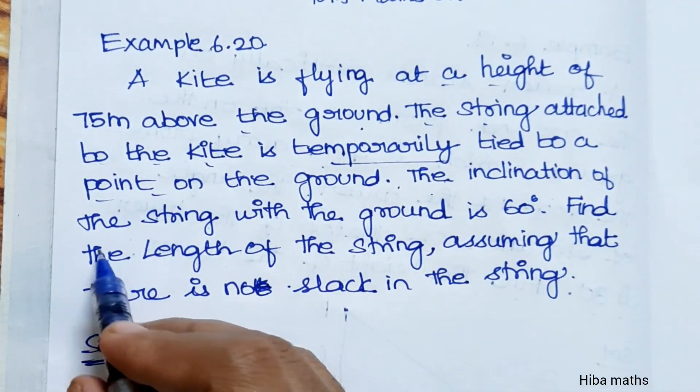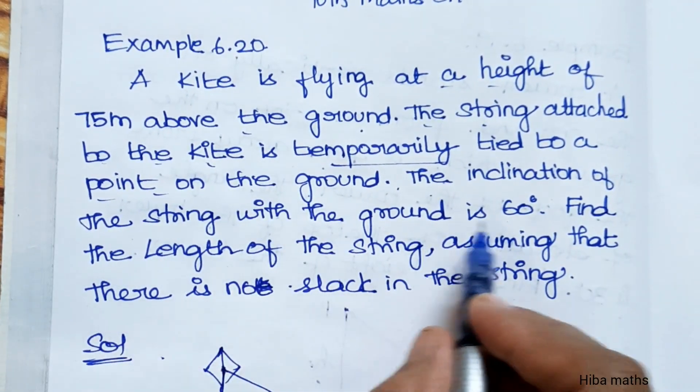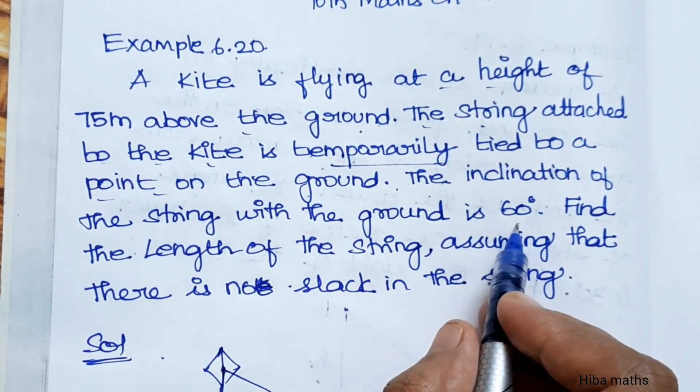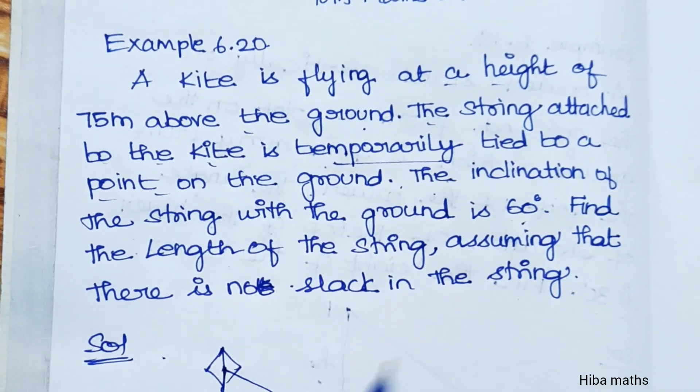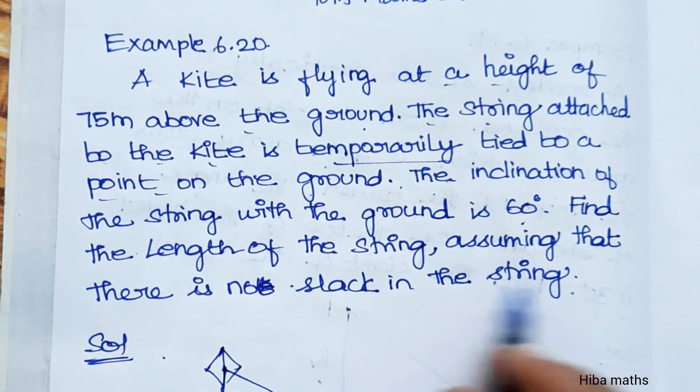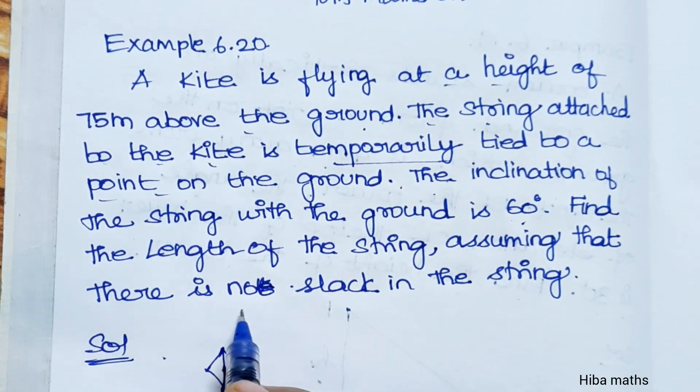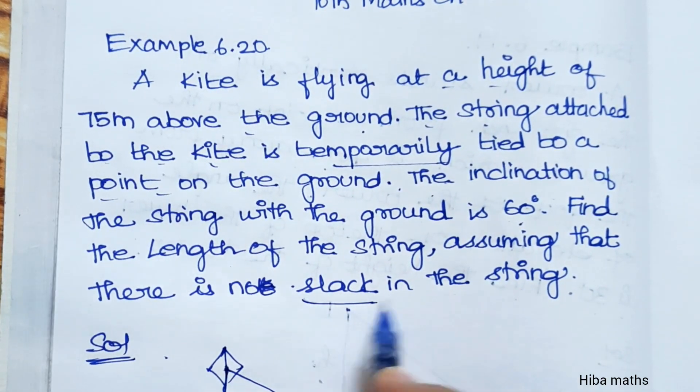The inclination of the string with the ground is 60 degrees. Find the length of the string, assuming there is no slack in the string.